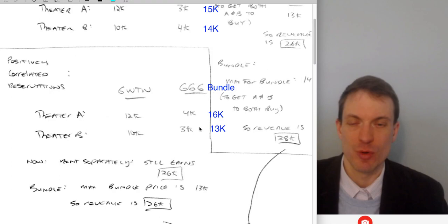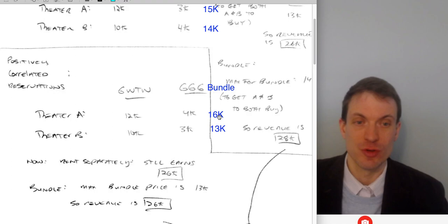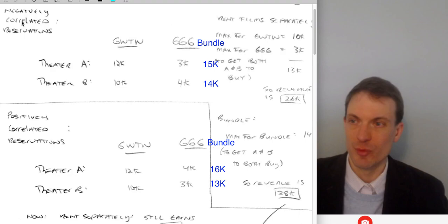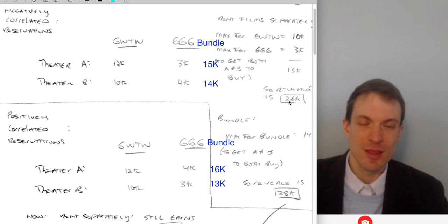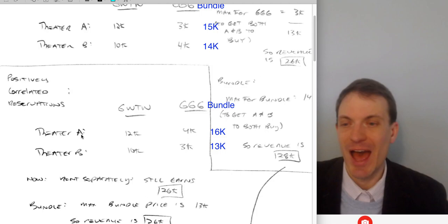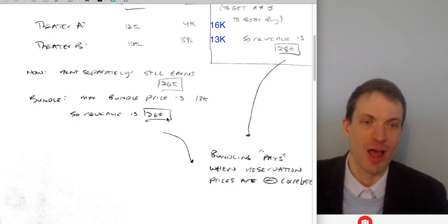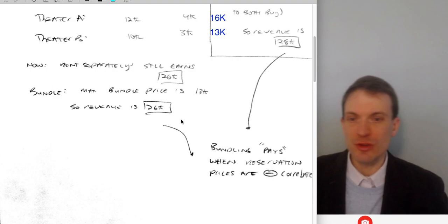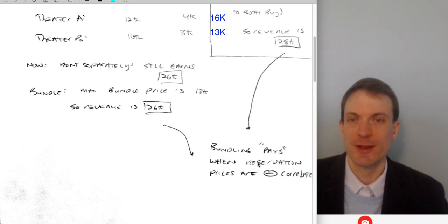What about bundling in case two? Now the maximal bundle price to get both to buy is 13K. I could get 16K if I sold the bundle at 16K, but I'm only going to get that from theater A. If I set the price of the bundle at 13K, both theater A and theater B will buy and my bundle revenue would be 26K. So bundling pays when the reservation prices are negatively correlated — in case one, bundling gave 28K versus 26K for separate pricing. With positively correlated reservations, it doesn't help; we still get 26K either way.